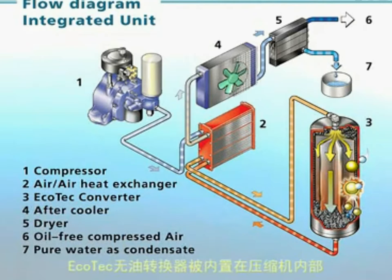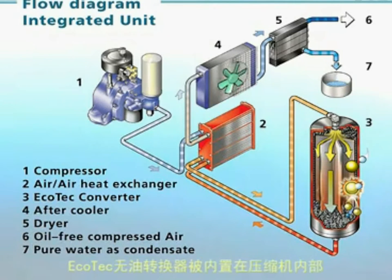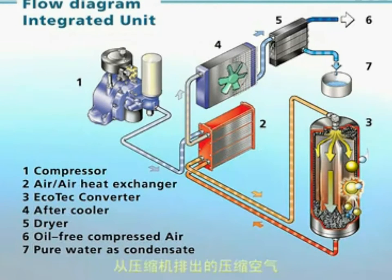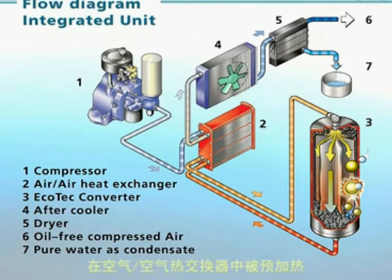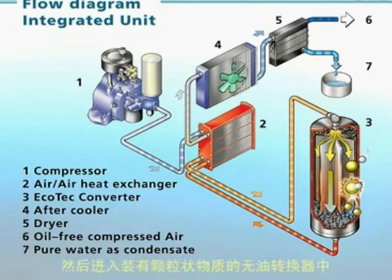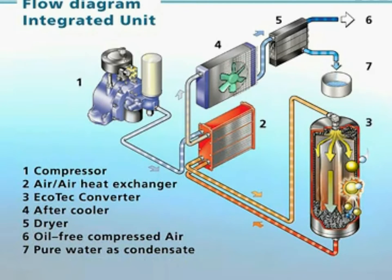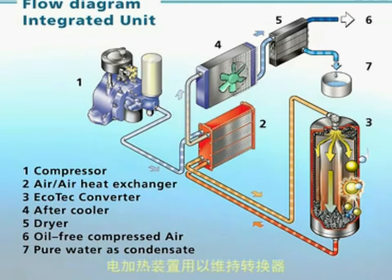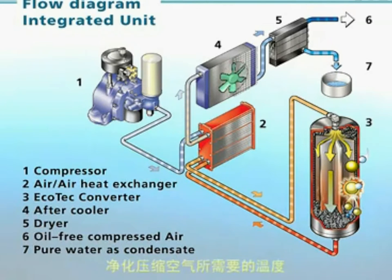The Ecotec Converter is installed right into the compressor unit. The compressed air coming out of the compressor is preheated in the air-air heat exchanger and then flows into the converter, which is filled with catalyst. An electrically operated heater maintains the converter at the operating temperature required to purify the compressed air.